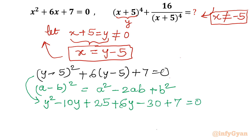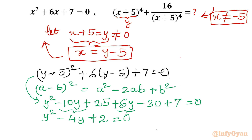Simplifying: −10y + 6y gives −4y, and 25 − 30 + 7 gives 2. So the equation becomes y² − 4y + 2 = 0. Our quadratic has been converted into a new quadratic in variable y.